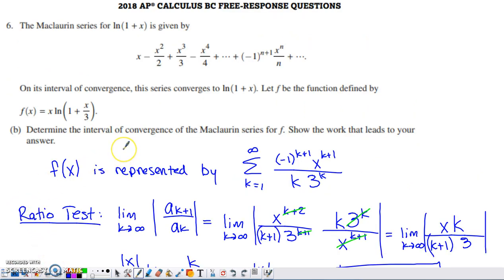Part B asks us to determine the interval of convergence of the Maclaurin series that we just came up with in Part A. Show the work that leads to your answer. If you're looking for the interval of convergence of a series, you're going to go with the ratio test to determine that in almost every single circumstance.